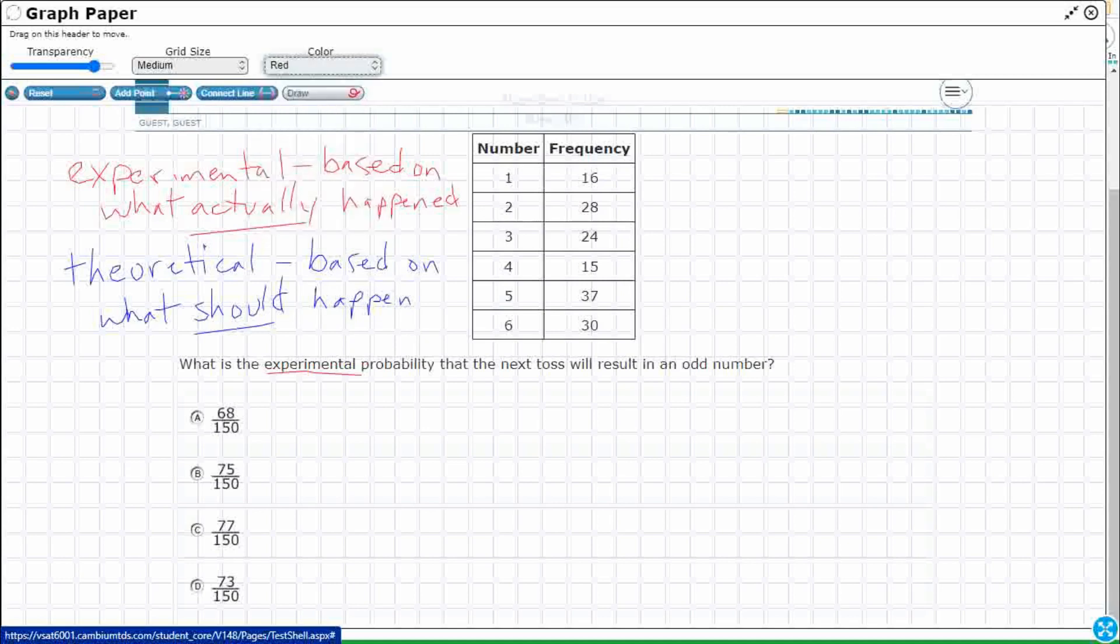So we are looking for the experimental probability. So what is the experimental probability that the next toss will result in an odd number? Okay, well, we need to know even and odd. Super simple. We've been doing that since the first grade.